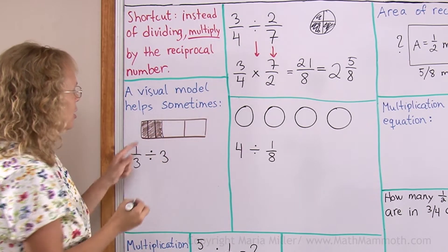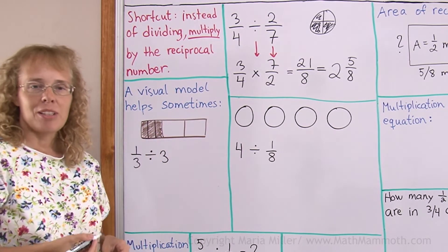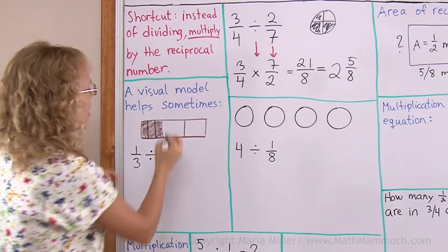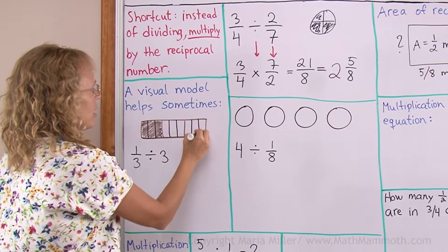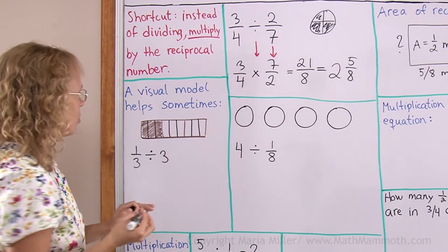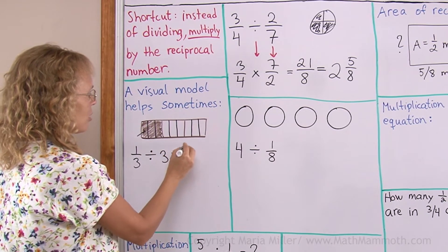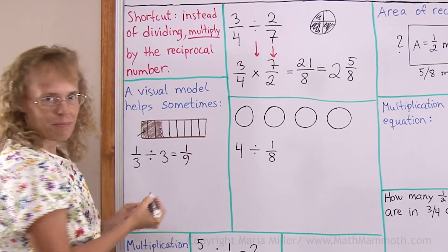I'll cut it like that. Each one will get that kind of a piece. But how much is it of the whole chocolate bar? Well, to see that, you probably have to divide these into similar pieces too. So now you see, each person would get one of those, which is just 1/9.